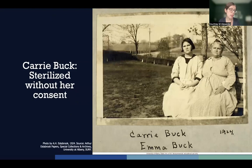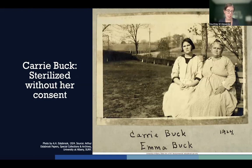Eugenicists used the U.S. legal system to create a pathway for programs where people could be sterilized by local and state public health figures. Carrie Buck was born in 1906 to a poor mother who was eventually committed to the Virginia State Colony for epileptics and the feeble-minded. Carrie was placed in foster care, and at 17 she became pregnant as the result of being raped, most likely by a nephew of her foster parents. Her foster parents then committed her to the Virginia State Colony on grounds of feeble-mindedness and promiscuity. In 1927, Carrie was the plaintiff in the Supreme Court case Buck v. Bell, which established that the state does have a right to sterilize someone without their consent.